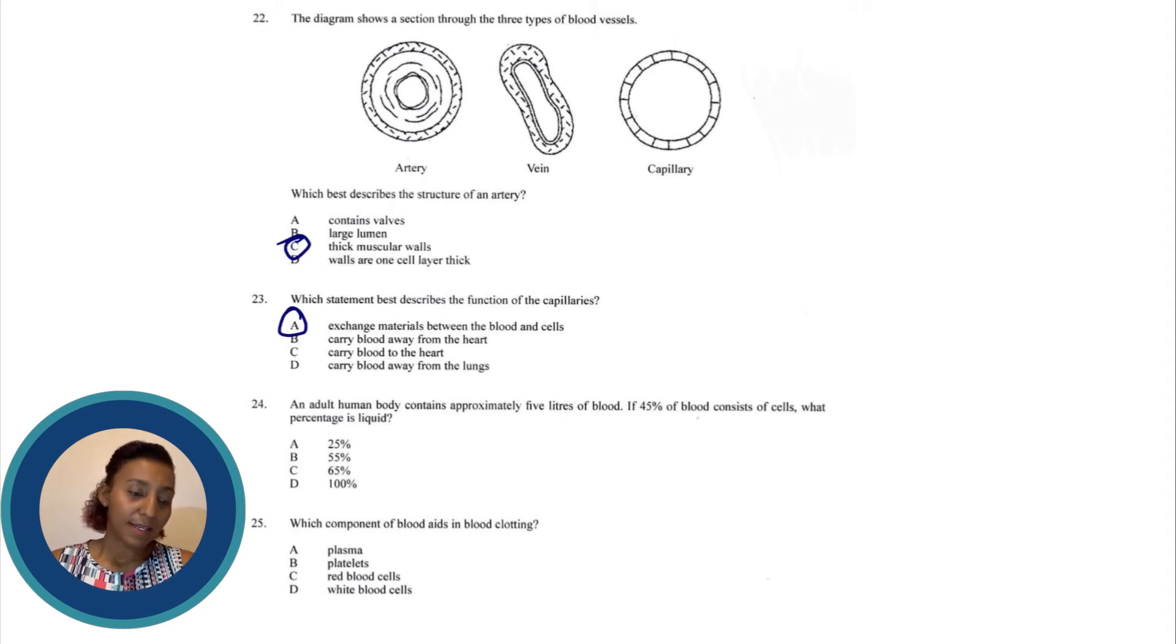Number 24 says an adult human contains approximately five liters of blood. If 45 percent of blood consists of cells what percentage is liquid?